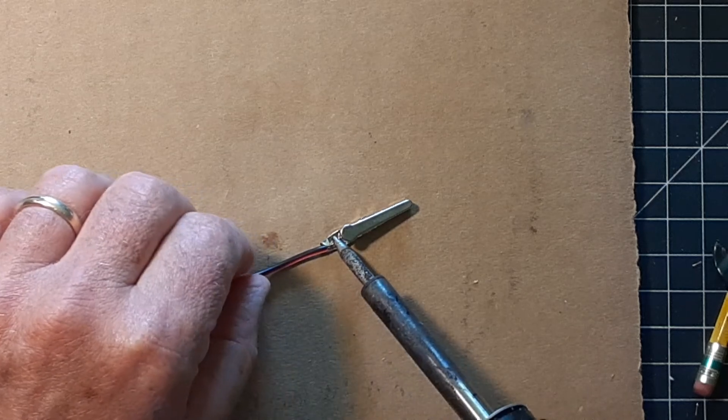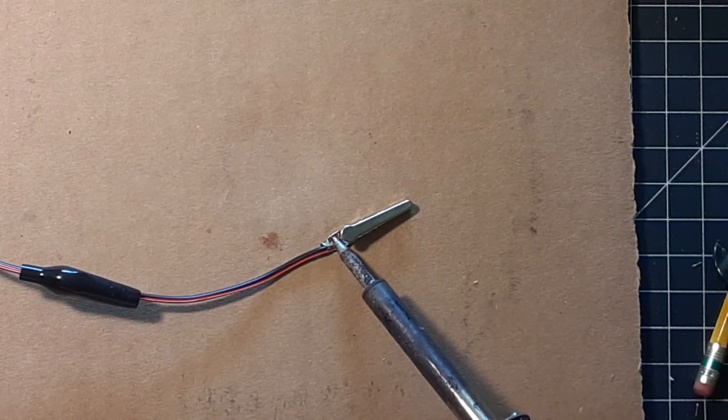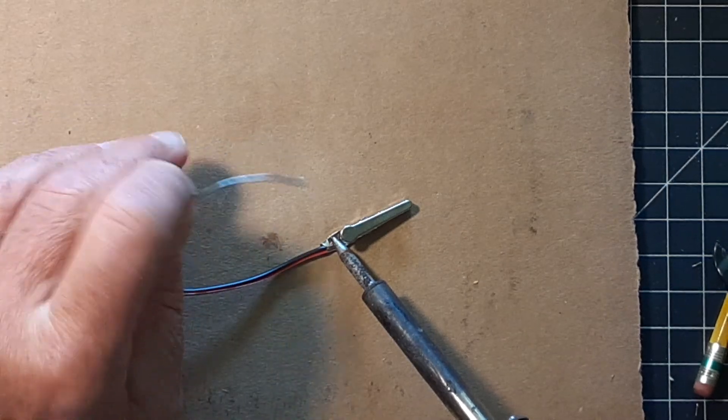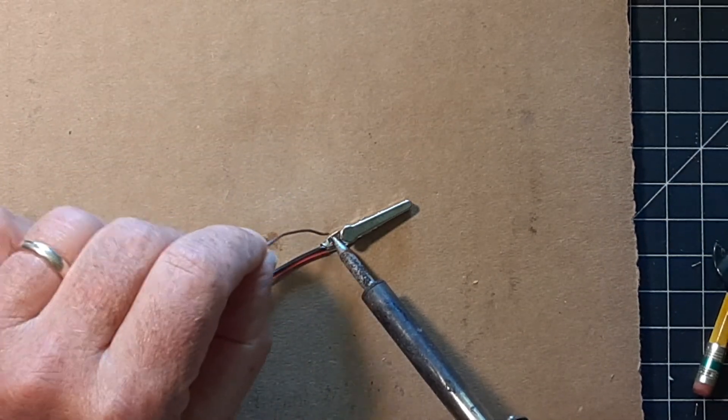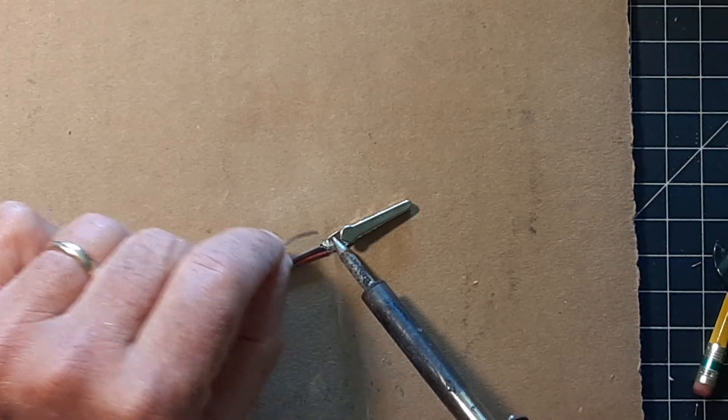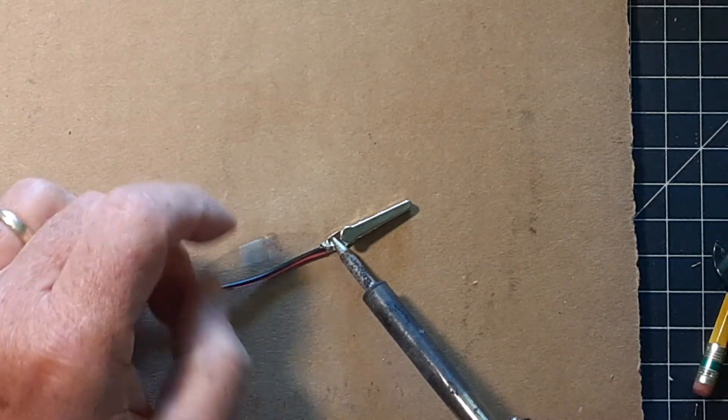So we're going to heat up the clip and the wire together, press it down good. I've got a piece of cardboard under all this and we just feed some solder into this and it'll melt and fill in the gaps.